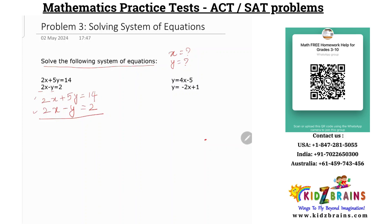2x plus 5y is 14 and 2x minus y is 2. Since 2x is common, I choose the second equation. The idea is I need to cancel out one of the variables. 2x and 2x — if I need to cancel them out, then I need to subtract. So I multiply the second equation by minus 1: your plus 2x becomes minus, your minus y becomes plus y, and your plus 2 becomes minus 2.